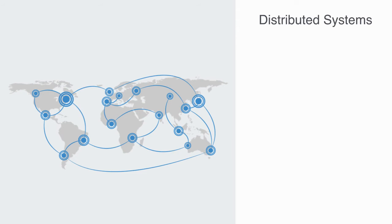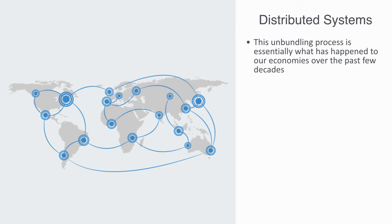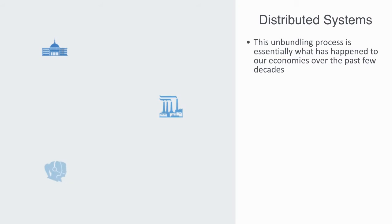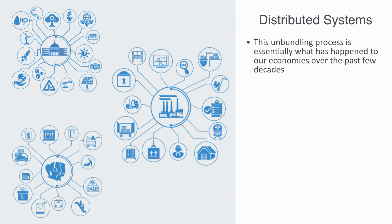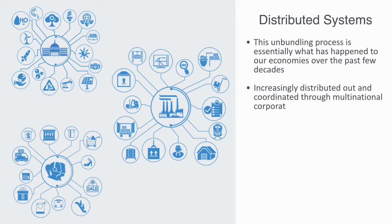With the rise of information technology, the reduction in trade tariffs, and the proliferation of the free market ideology, this unbundling process is essentially what has happened to our economies over the past few decades. Factories, production processes, services, national infrastructure systems, and even whole national economies have, through privatization and globalization, become unbundled. Components are no longer bound within centralized structures, but are increasingly distributed out and coordinated through multinational corporations, global markets, and the internet. This is only set to continue as the internet becomes an ever more important platform for production.